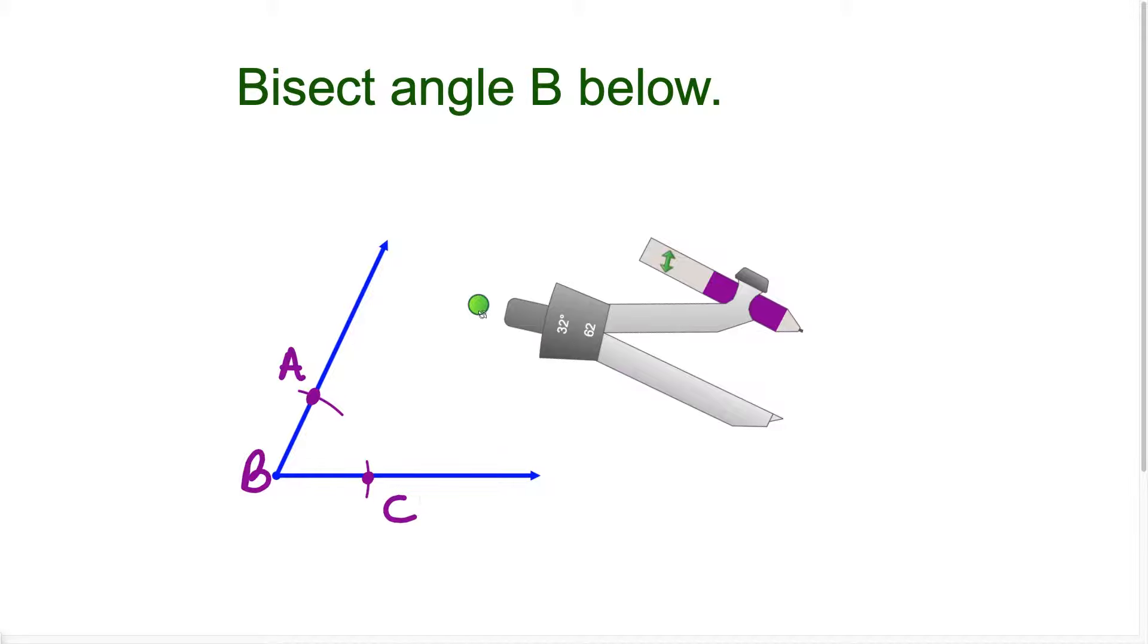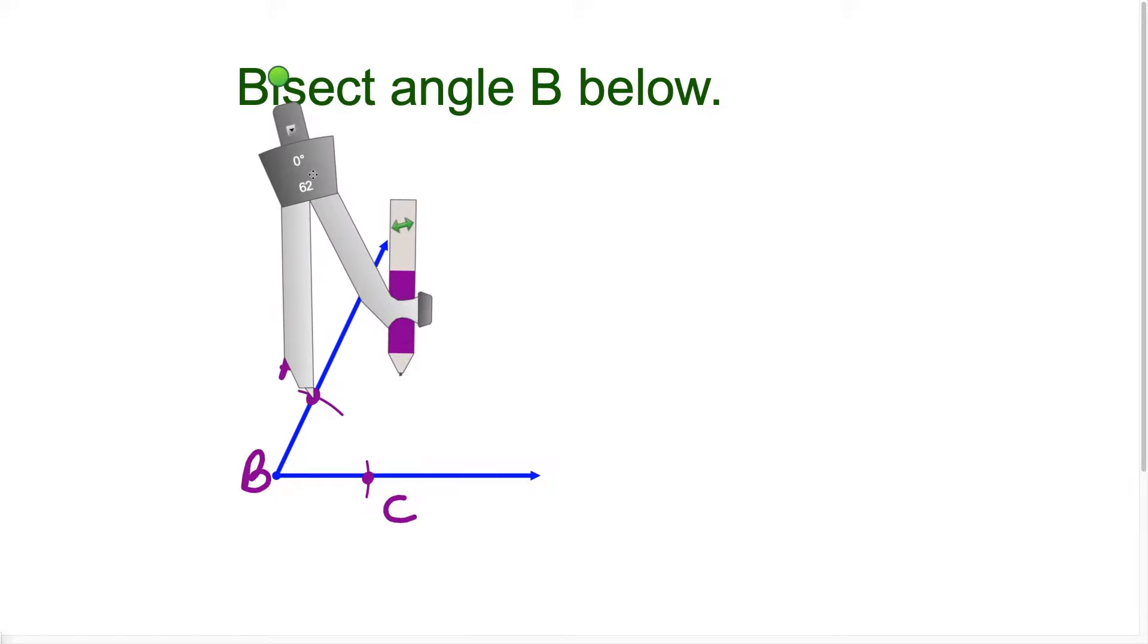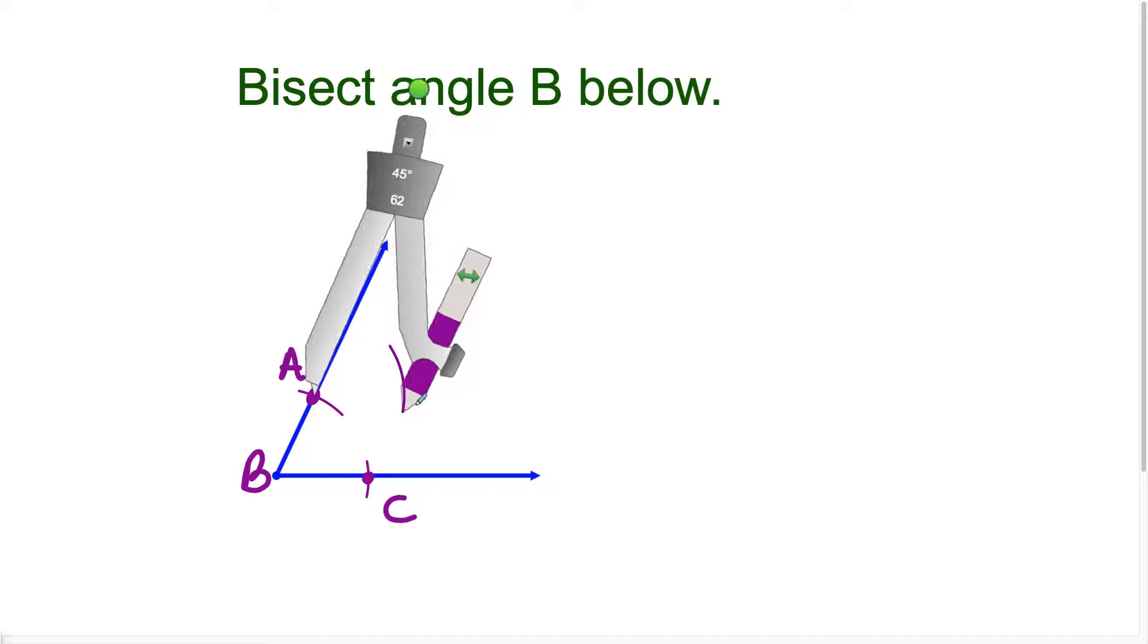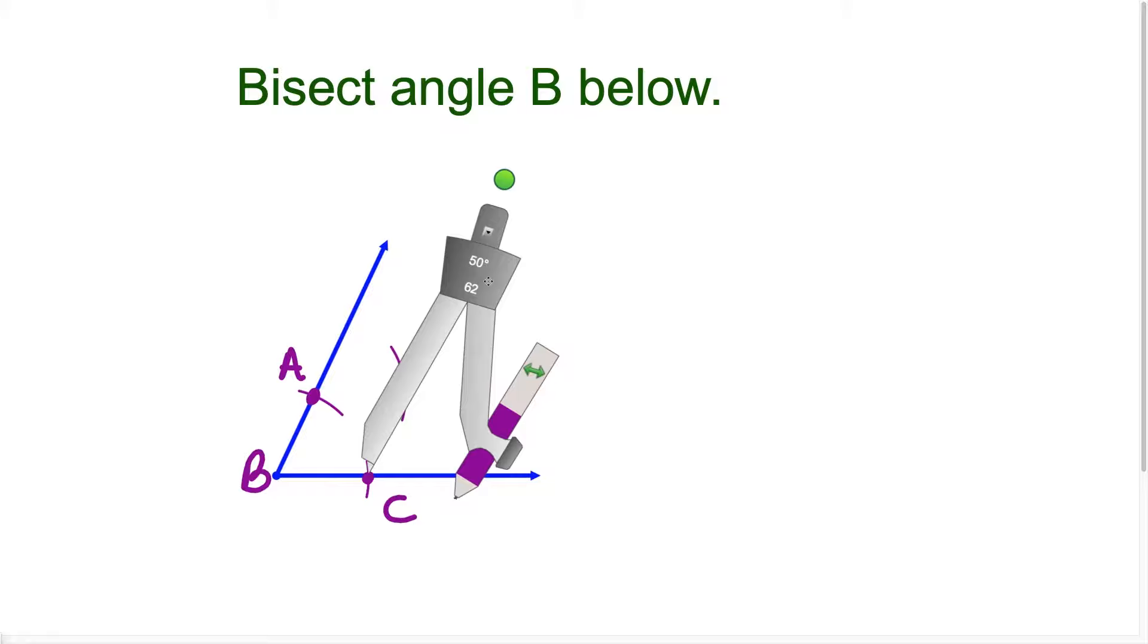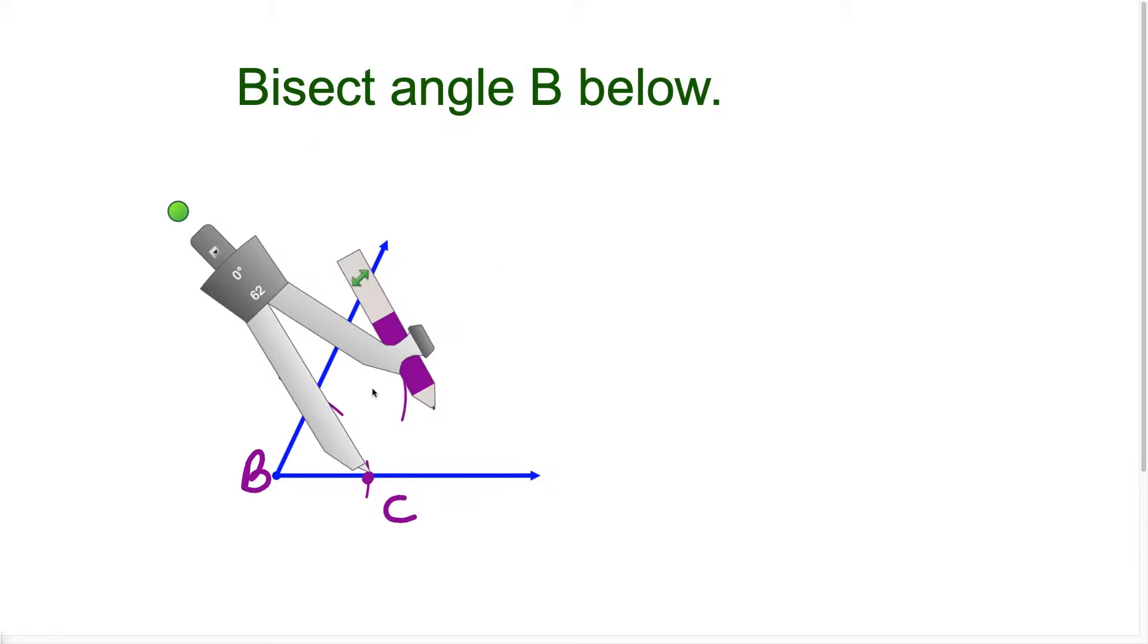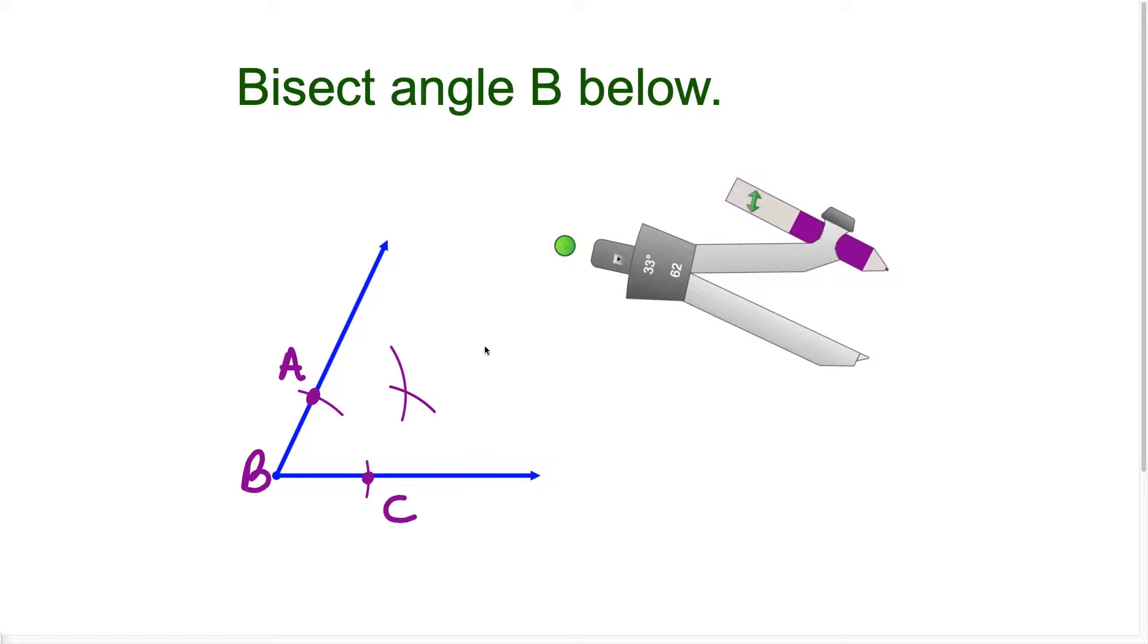Then I want to place the compass on point A and swing an arc so that it goes to about the middle of this angle. Just know the bisector of an angle is a line that cuts the angle in half. So when I swing these arcs from point A and point C, they need to go to about the halfway point of the angle so you can see where they intersect.